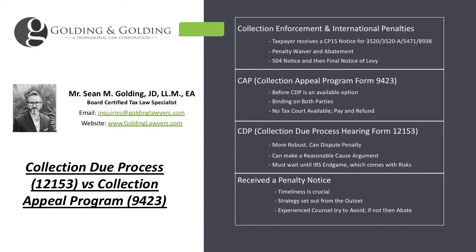In a typical scenario, a person receives a CP15 notice for a huge penalty, and they're going to try to abate or use reasonable cause to have that penalty dismissed. In the meantime, the enforcement process continues. So once this letter comes in, the taxpayer understandably gets freaked out and thinks, let me rush off and do a collection appeal. The collection appeal may be a good opportunity, but if the goal of the taxpayer is to go to tax court, it's not.